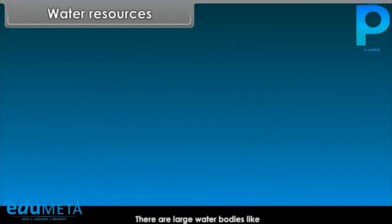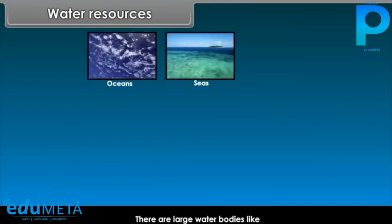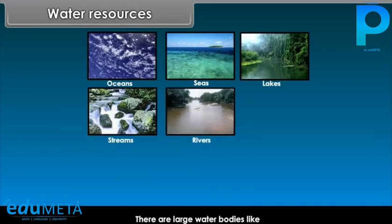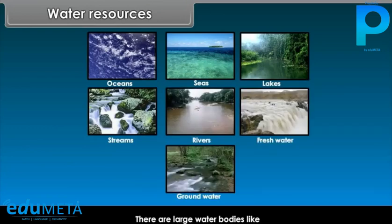There are large water bodies like oceans, seas, lakes, streams, rivers, freshwater, groundwater, etc. These are the different sources of water on Earth.